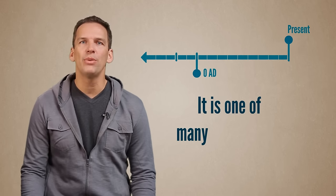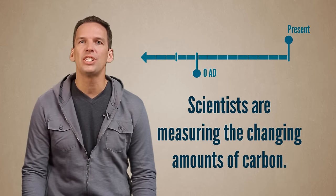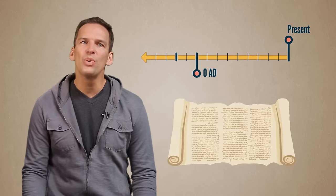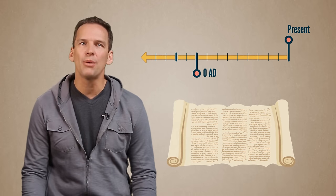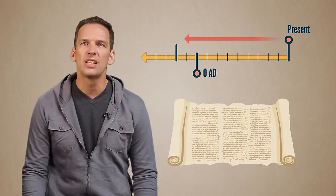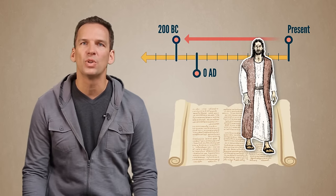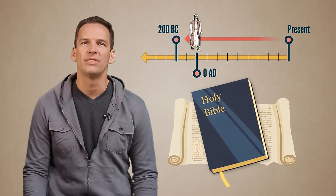It is one of many radiometric dating techniques, and as you can guess, scientists are measuring the changing amounts of carbon. Through this technique, scientists were able to show that these ancient copies of the Old Testament were over 2,000 years old. Some even dated 200 years before Jesus, and amazingly, were almost identical to the Bibles we have today.